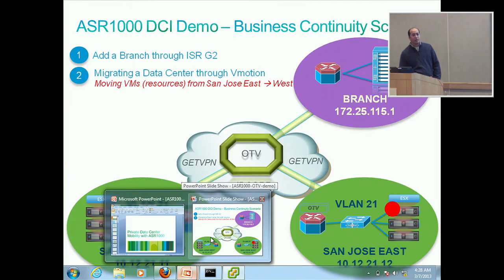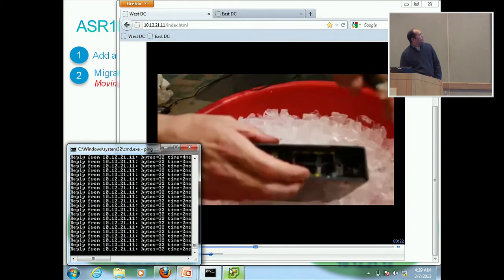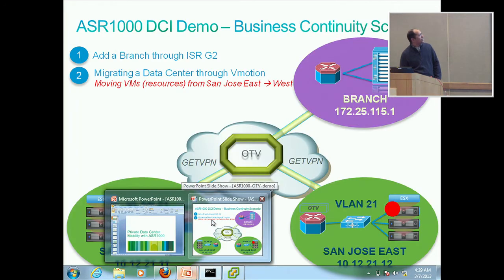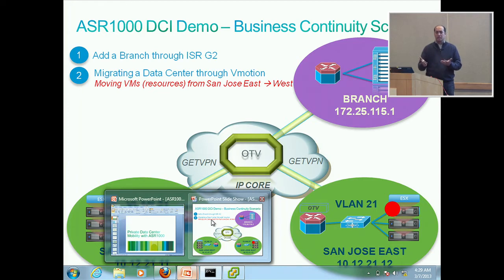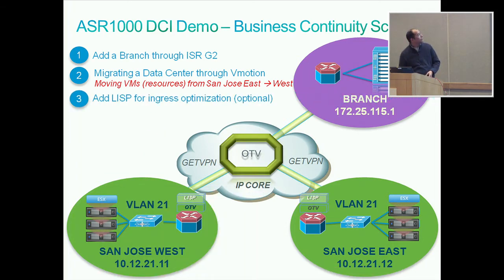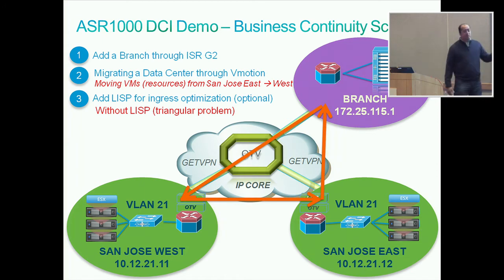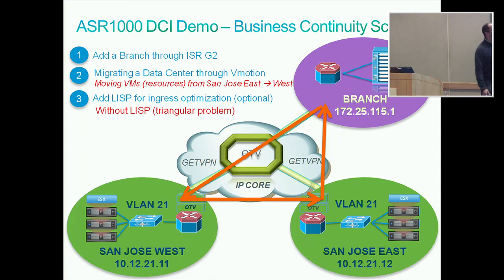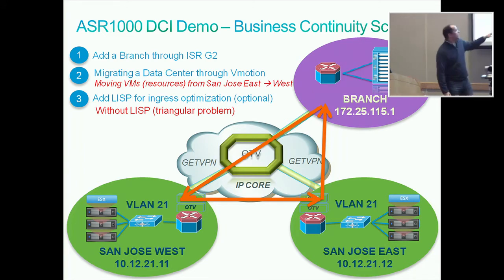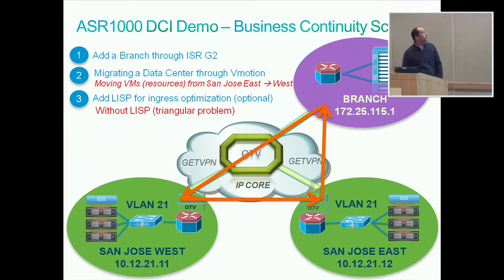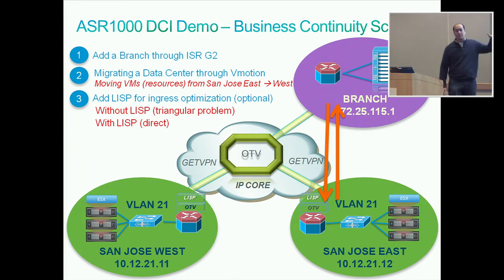Is this just using OTV or is LISP layered on this? It's using OTV for now, but LISP support is available in 3.9. You can do the same thing we did with OTV using LISP mobility in across-subnet mode. We also support LISP and OTV both together. The reason customers want to add LISP is the triangle problem: when you move the VM, the branch will still send traffic to the old data center based on layer three routing, and the old data center will forward it through the OTV tunnel. Adding LISP gives you direct path optimization.